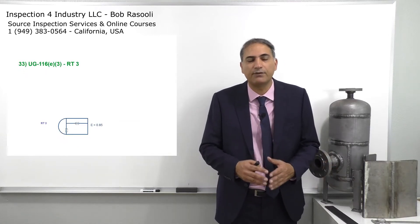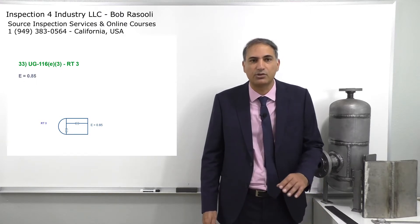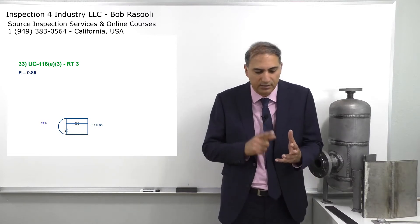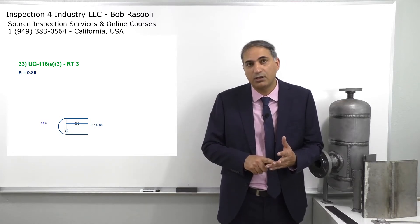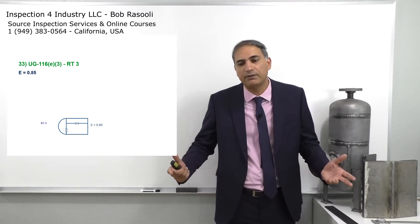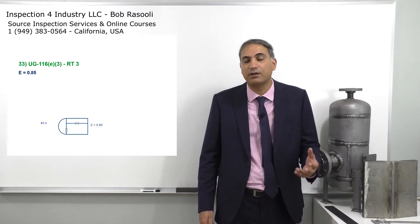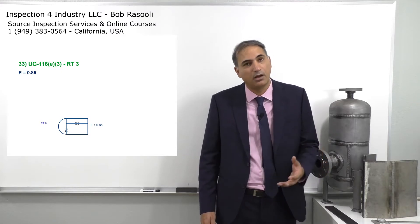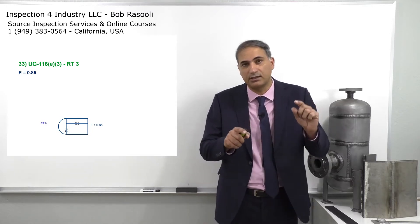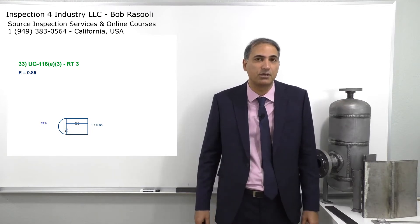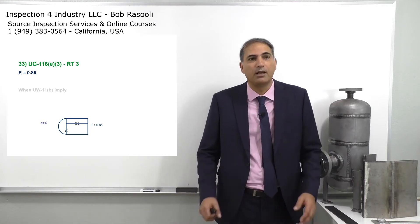RT3 is a spot radiography explained in UG-116 E3 RT3. You don't have to meet lethal service requirements or have your wall thickness fall to the UCS-57 limitation for radiography testing. When the manufacturer decides to do spot radiography, the joint efficiency is going to be 0.85 — a little bit higher wall thickness, since joint efficiency and thickness move in opposite directions.